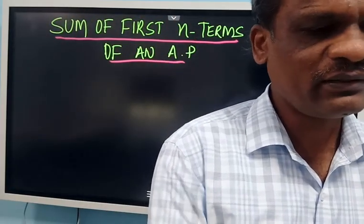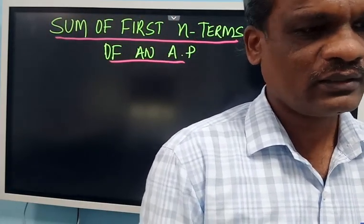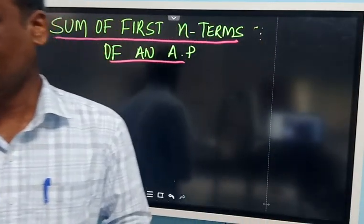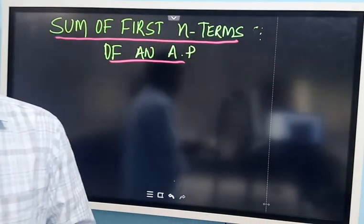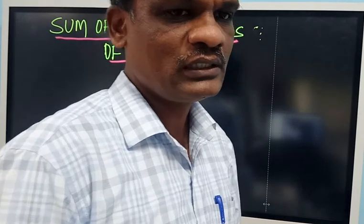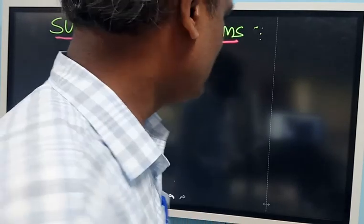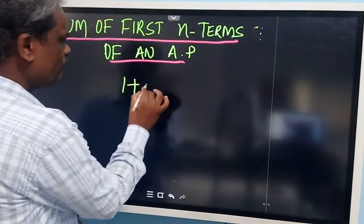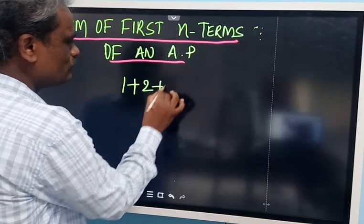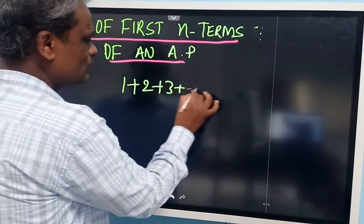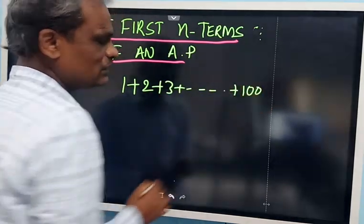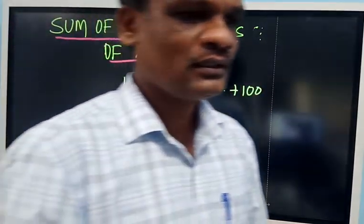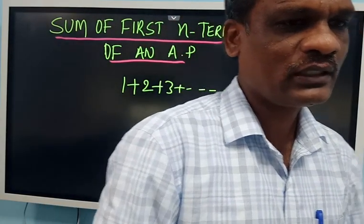Whatever question the teacher asked, immediately he used to give the response and would be busy disturbing the class. So the teacher wanted to engage him so that he would not disturb the class. What did he do? He gave him a task: add the numbers from 1 to 100. Teacher told Gauss to add the numbers from 1 to 100.